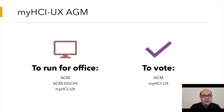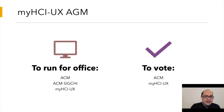In order to run for office in the AGM, you will need to be a member of ACM, ACM SIGCHI, and myHCIUX. To vote, you will only need to be a member of ACM and myHCIUX.